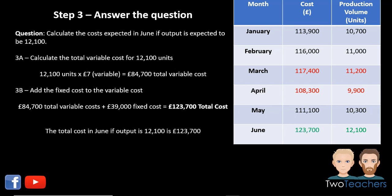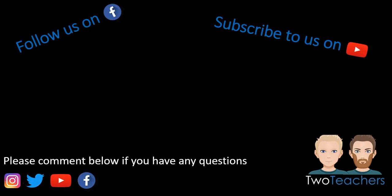Therefore, the total cost in June if output is 12,100 units is £123,700. As you can see in the table on the right, I've now entered the answer of £123,700 for June. And there you have it — the high-low method. I hope that's helped. If you have any questions, please comment below or follow us on Facebook at 2TeachersBusiness.